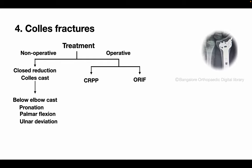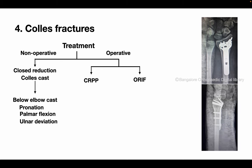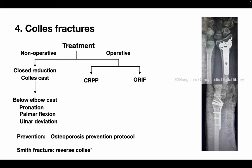There has been a lot of emphasis on preventive measures of osteoporotic fractures, which also apply to Colles fracture. A quick note on Smith's fracture, also called reverse Colles fracture: it is associated with volar displacement of the distal fragment and the treatment is similar to Colles fracture.